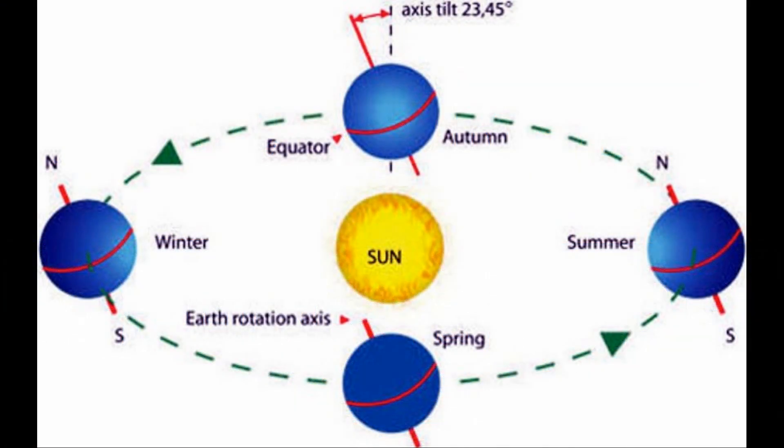Here is basically an oversimplified version of what our orbit around the sun is, how the seasons change, and the orientation of the north and the south. North in this version being up, south of course being down. Summer on the right, winter on the left, fall or autumn in the back, and nearest us is spring.